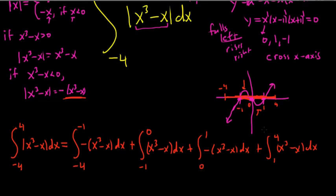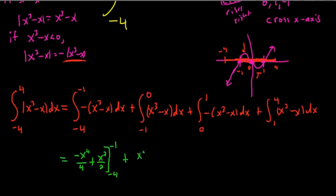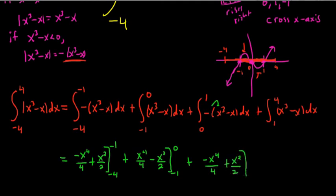I'm pretty sure we could have used symmetry to take a shortcut, but let's just grind it out. Integrating and distributing at the same time using the power rule: the first piece gives negative x⁴/4 plus x²/2 from negative 4 to negative 1; plus x⁴/4 minus x²/2 from negative 1 to 0; plus negative x⁴/4 plus x²/2 from 0 to 1; plus x⁴/4 minus x²/2 from 1 to 4.